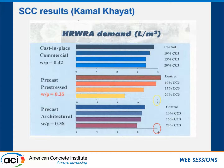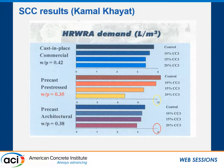He preferred to reduce the high-range water reducer thinking it reduces the price of a yard of concrete. But sometimes the cement is so much more expensive that it makes more sense to reduce the cement instead, lower your water-to-cement ratio, and compensate for that slight strength loss from replacing 20% of the cement.